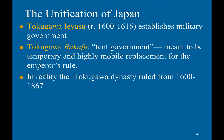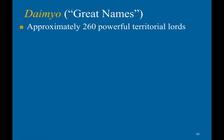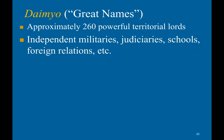Japan was finally unified under Tokugawa Ieyasu, who established a military government. It created the Bakufu, or 'Tent Government,' which was meant to be a temporary and highly mobile replacement for the Emperor's rule. In reality, the Tokugawa dynasty ruled from 1600 to 1867. This is a map of Tokugawa Japan — we often think of Japan as a north-south country, but they view themselves as an east-west country.